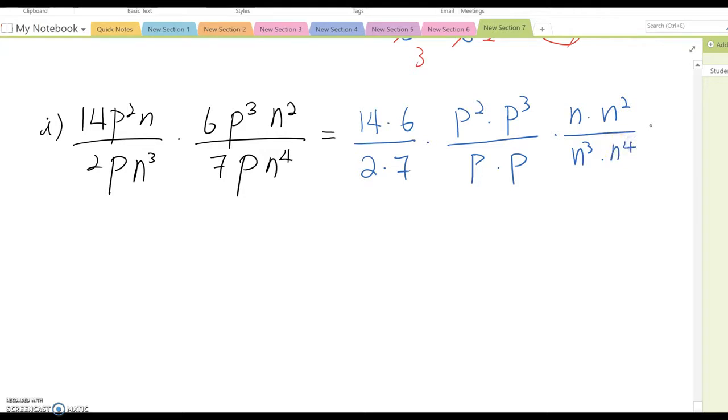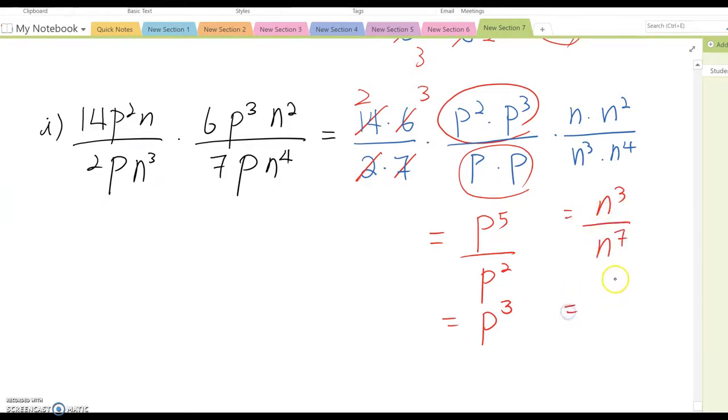From here we can simplify. Then it becomes 2 and 3, and these become total 5 and total 2 here, so we can rewrite this p⁵ over p² which means p³. Now this is n³ over n⁷ so becomes 1 over n⁴, so we can rewrite this 6 times p³ times 1 over n⁴. So the answer becomes 6p³ over n⁴.